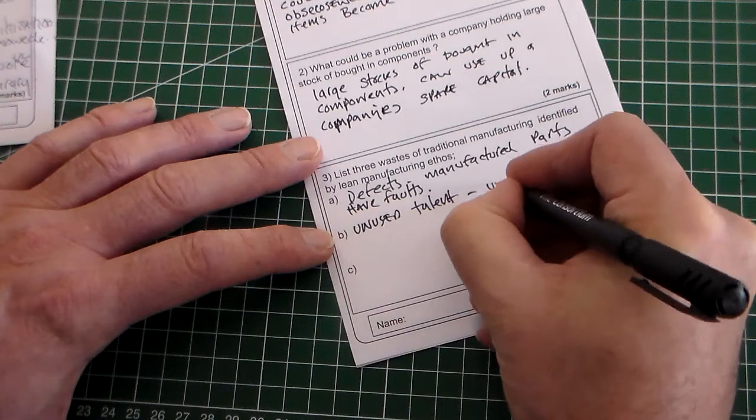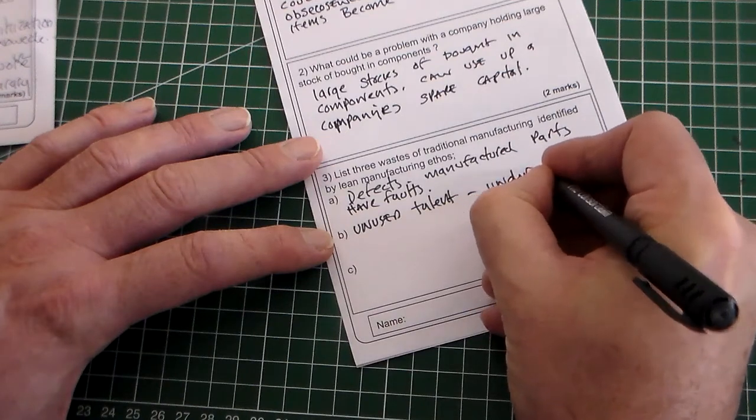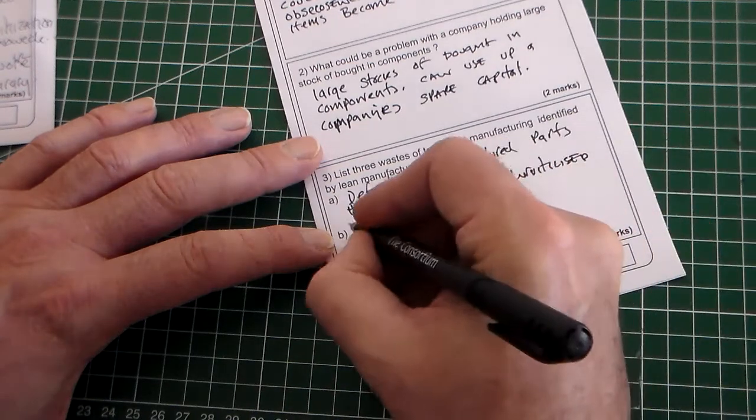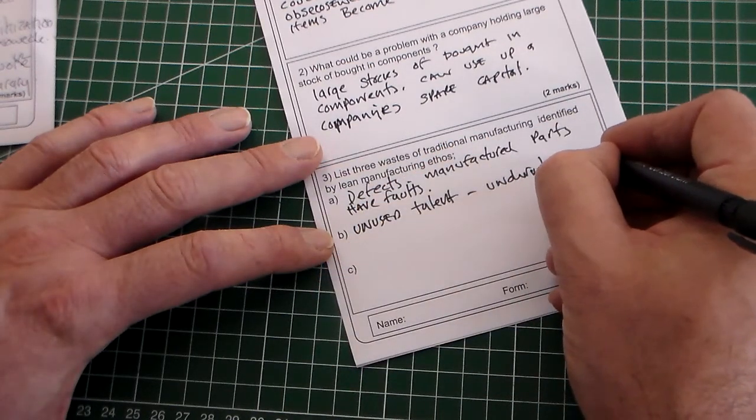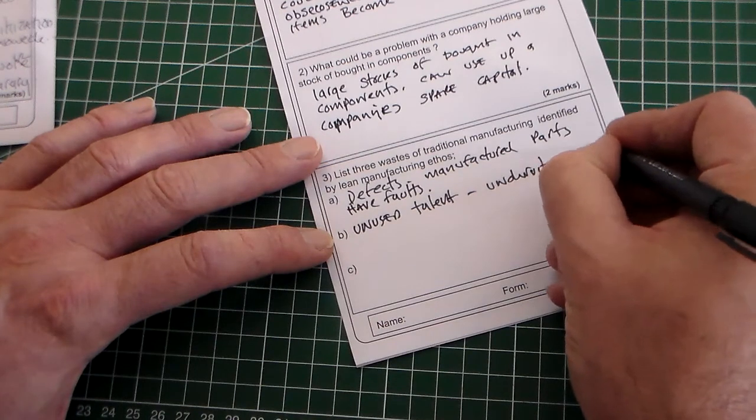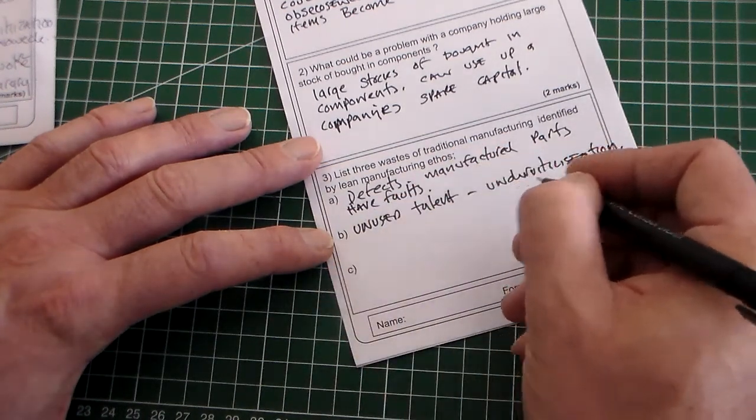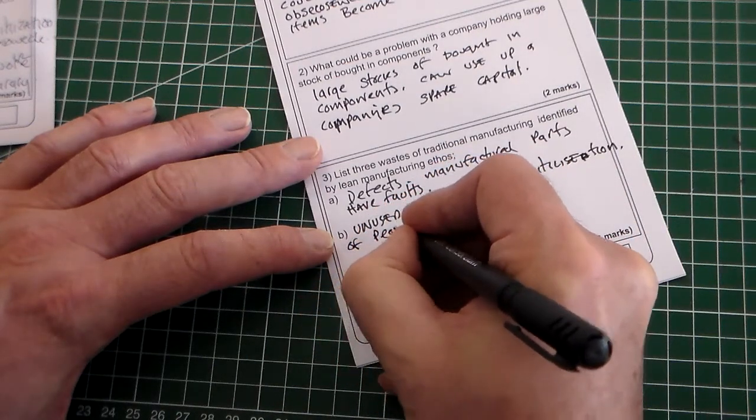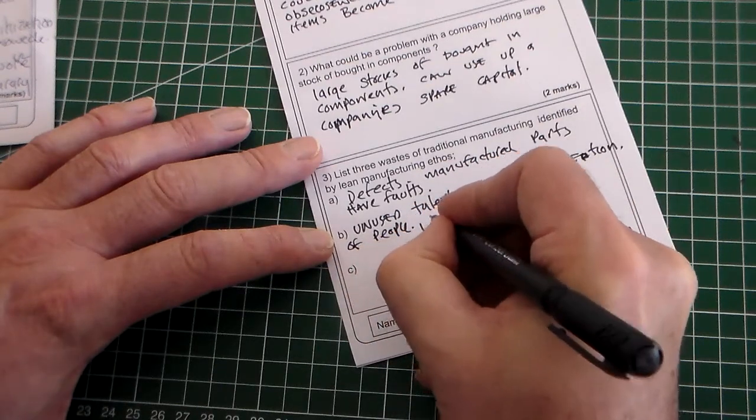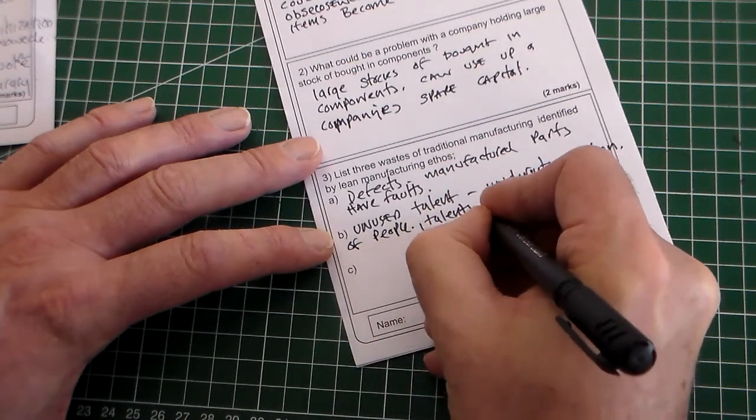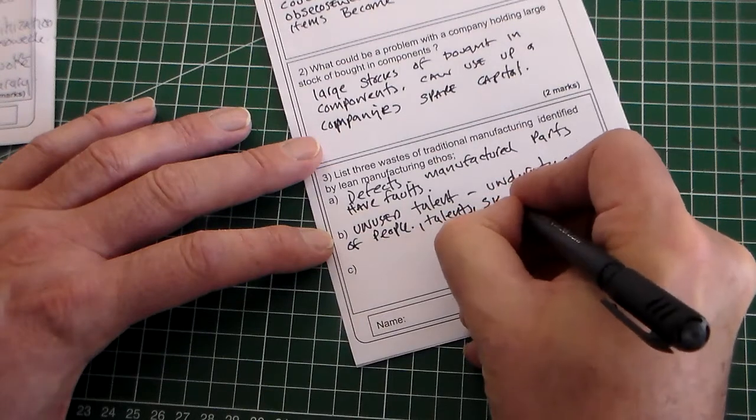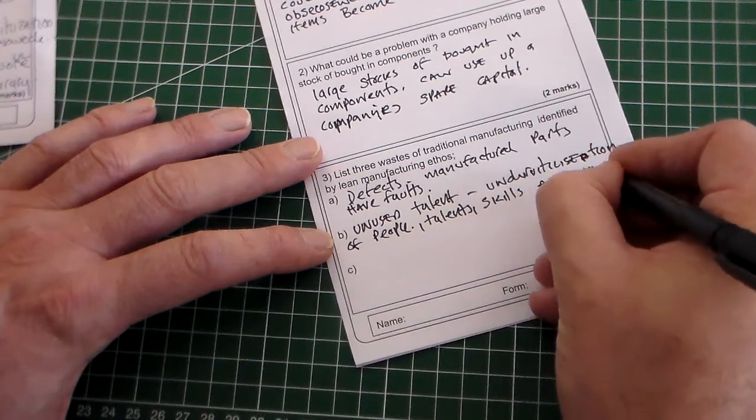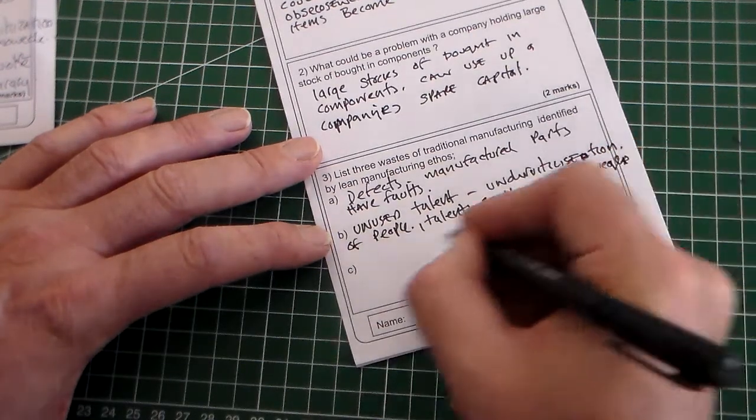Unused talent. So that's underutilization of people, their talents, or their skills and knowledge. That's basically not recognizing these things.